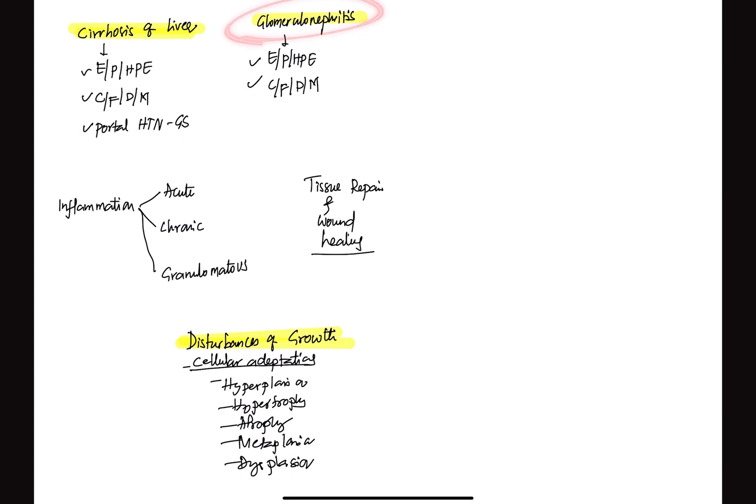And next, glomerulonephritis. Renal pathology, tough part. I have recorded around two and a half hour detailed video of all the glomerulonephritis things. Glomerulonephritis is majorly asked in pathology, but even clinical features, diagnosis and management is also important because it is part of general medicine also. And there is cellular adaptation: there are five things which are important. Hypoplasia, hypertrophy, atrophy, metaplasia and dysplasia. Questions have come from these topics in the recent past.